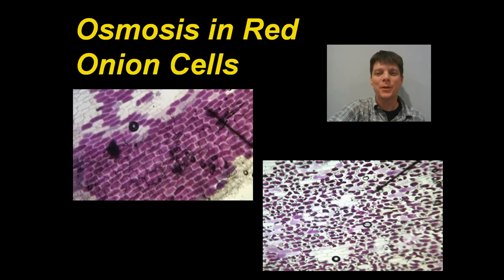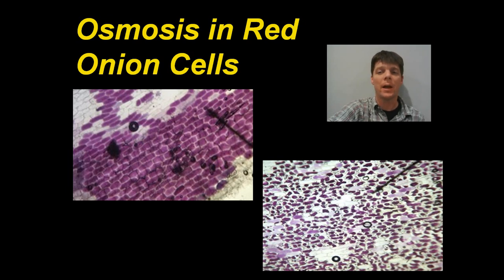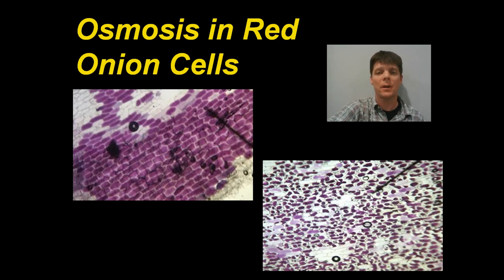Hi everybody, it's Mr. Pauler. In this video, we are going to be talking about the topic of osmosis taking place in red onion cells, and we're going to be looking at how osmosis can explain why red onion cells can sometimes look like this, but at other times they can look like this.